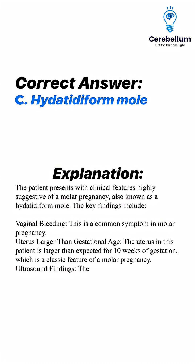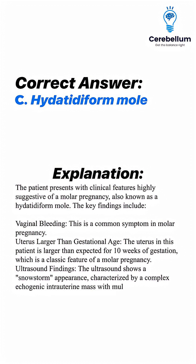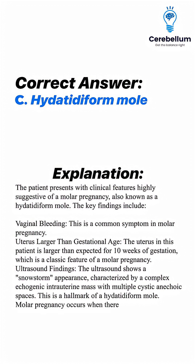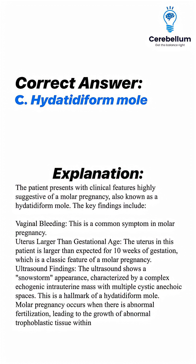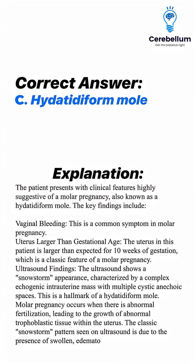The ultrasound shows a snowstorm appearance, characterized by a complex echogenic intrauterine mass with multiple cystic anechoic spaces — this is a hallmark of a hydatidiform mole. Molar pregnancy occurs when there is abnormal fertilization, leading to the growth of abnormal trophoblastic tissue within the uterus. The classic snowstorm pattern seen on ultrasound is due to the presence of swollen edematous villi and trophoblastic tissue without a viable fetus.